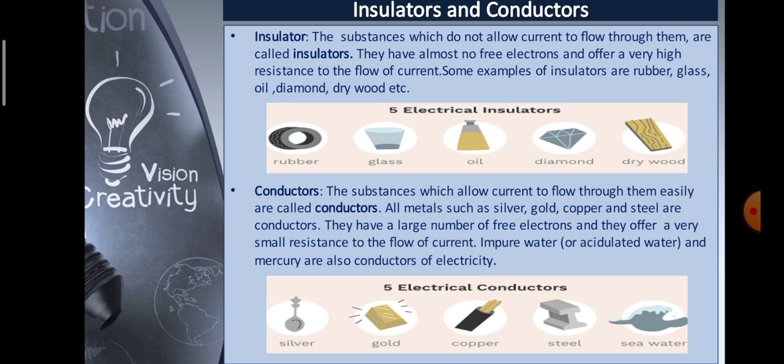Insulator. The substances which do not allow current to flow through them are called insulators. They have almost no free electrons and offer a very high resistance to the flow of current. Some examples of insulators are rubber, glass, oil, diamond, dry wood, etc.